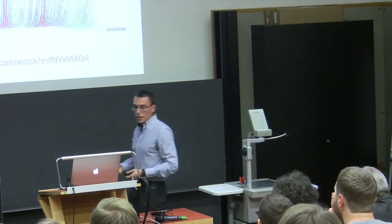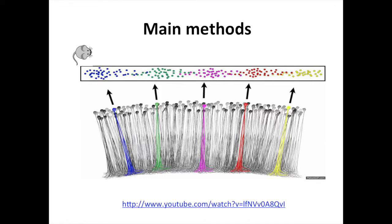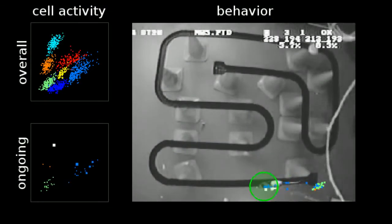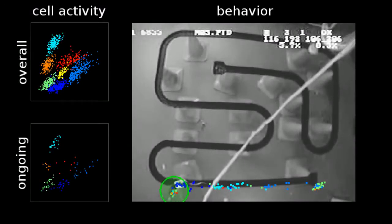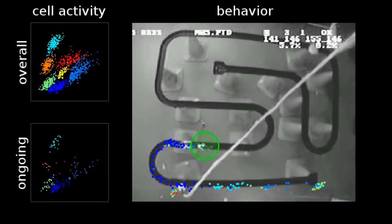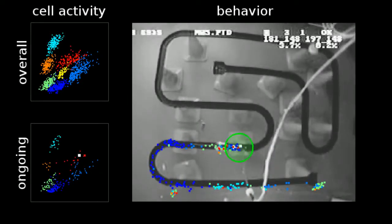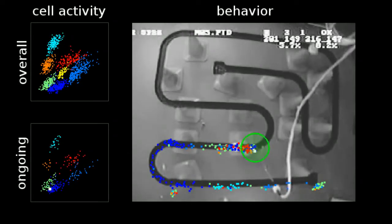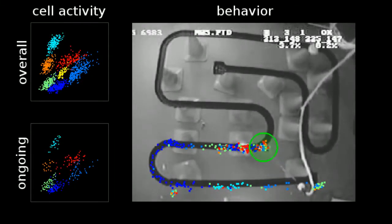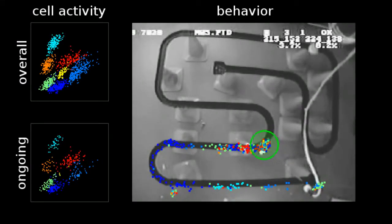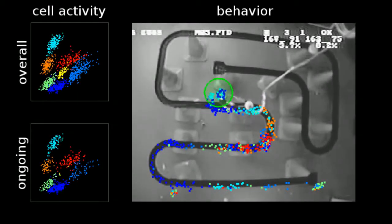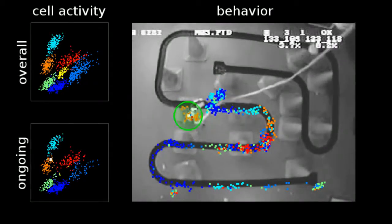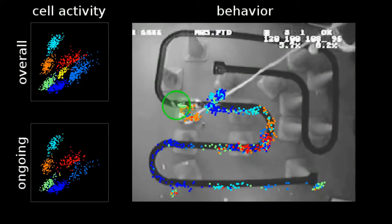With technical improvements since O'Keefe's original work, it is now possible to record multiple cells simultaneously. In this video, the animal moves through a path and a fiber implanted in the brain records seven different cells, each shown in a different color — the spot appears when that cell is active. You can see that for each region, only one specific cell is really active, confirming what O'Keefe described: each cell has a particular place field.